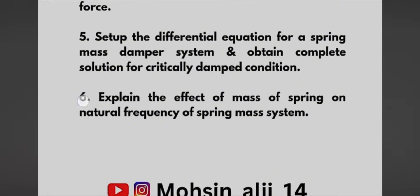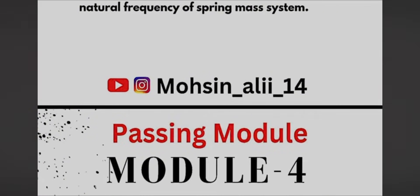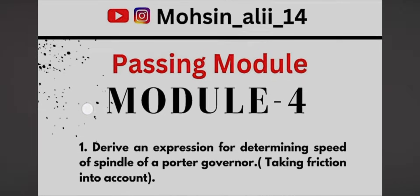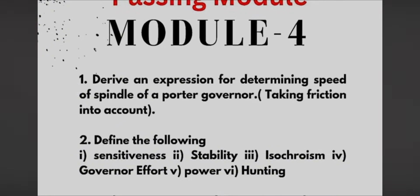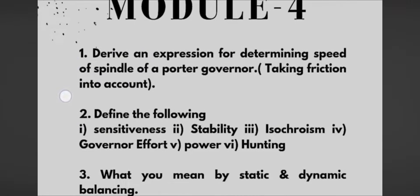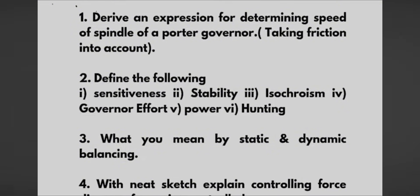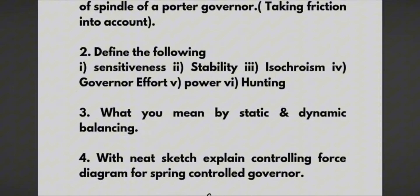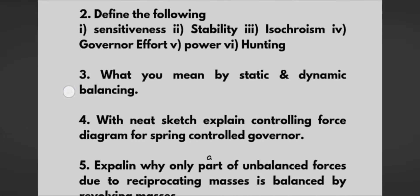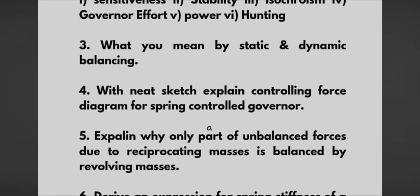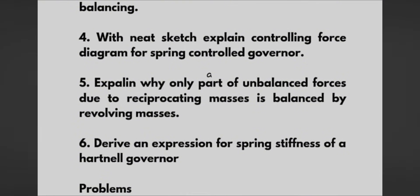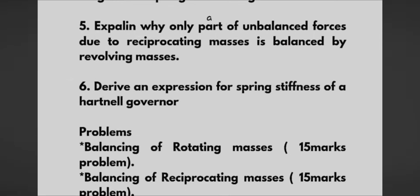This is the passing module so these questions should be at your utmost priority. Next one we have another passing module, that is Module 4. Derive expression for determining speed of spindle of a Porter governor. This is a super important question taking friction into account. Define the following: sensitiveness, stability, isochronism, governor effort, power, and hunting. What do you mean by static and dynamic balancing? With neat sketch, explain controlling force diagram for spring controlled governor. And explain why only part of unbalanced forces due to reciprocating masses is balanced by revolving masses. Derive an expression for spring stiffness of a Hartnell governor.